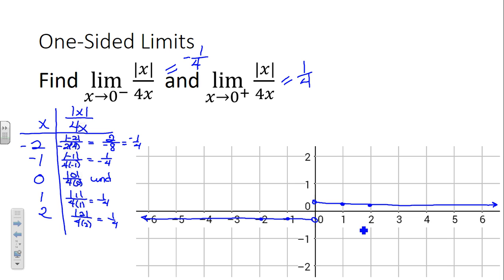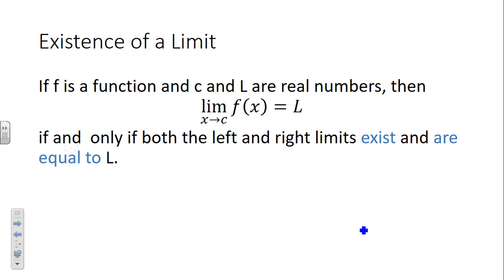One more time, we'll iterate it once again. Existence of a limit. We've written this down before. But the limit only exists if both the left and the right limits exist and are equal to L. They have to be equal to the same number. So, if F is a function, and C and L are real numbers, then the limit as x goes to C of that function is going to be L, provided its left and right behavior are doing the same thing. They're both approaching that same number L.